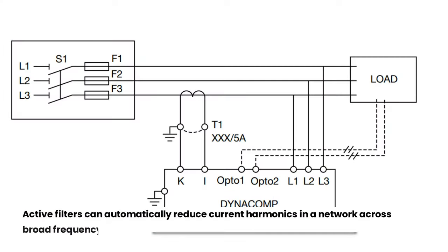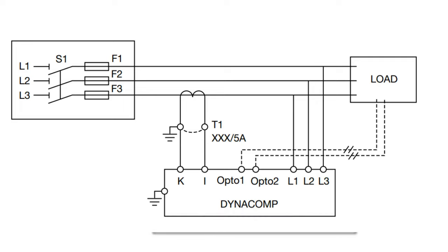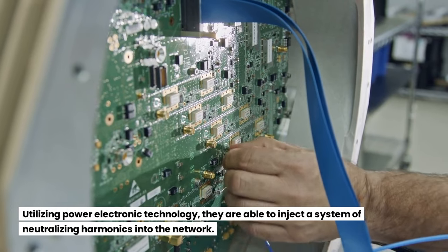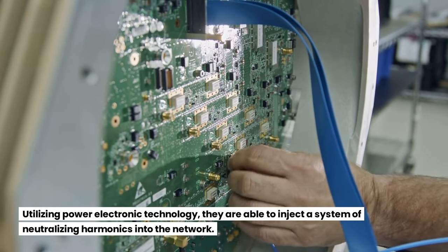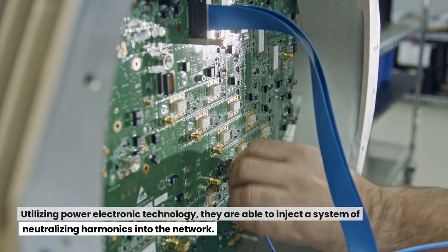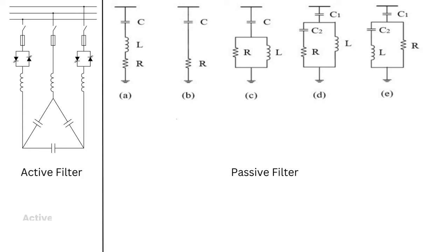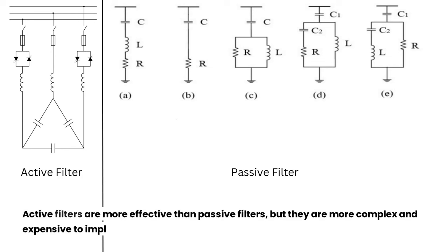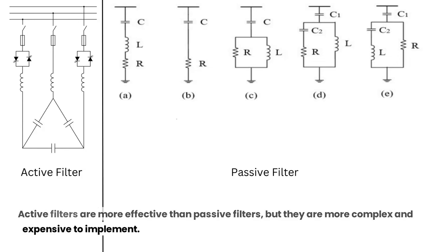Active filters can automatically reduce current harmonics in a network across a broad frequency spectrum. Utilizing power electronic technology, they are able to inject a system of neutralizing harmonics into the network. Active filters are more effective than passive filters, but they are more complex and expensive to implement.